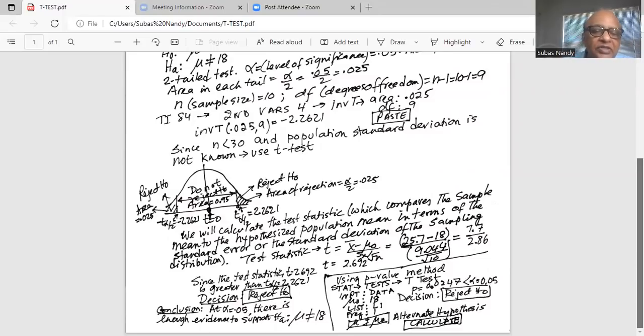So my decision is to reject H0. If I reject H0, then I conclude that at alpha equal to 0.05, there is enough evidence to support the alternate mu not equal to 18. Now I could have done this test with the p-value method too.